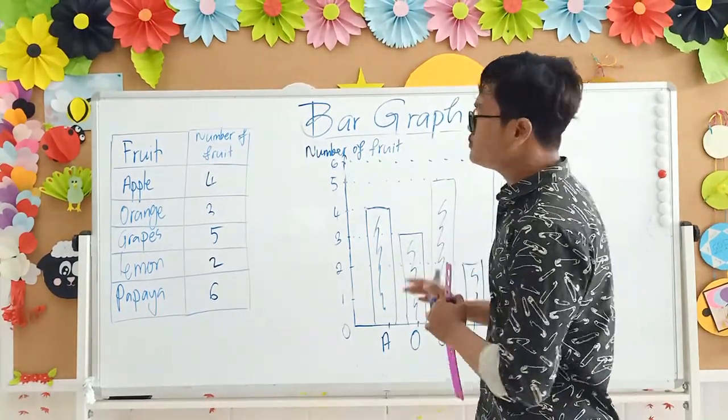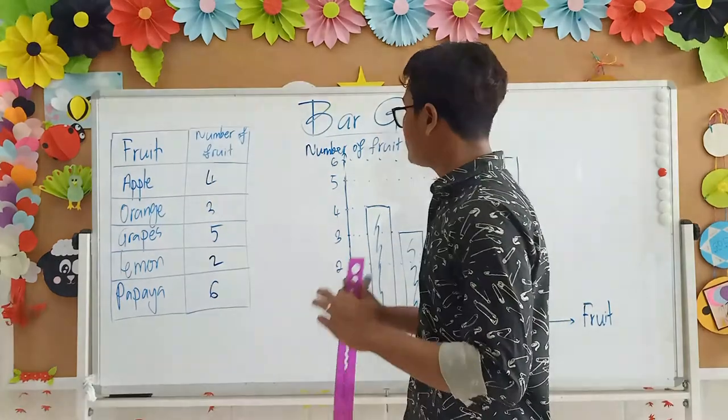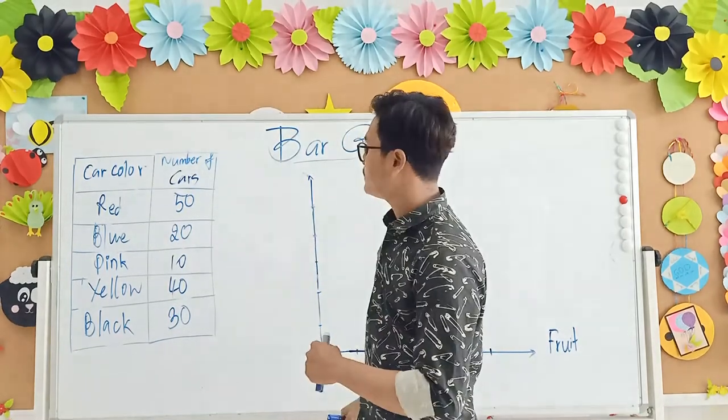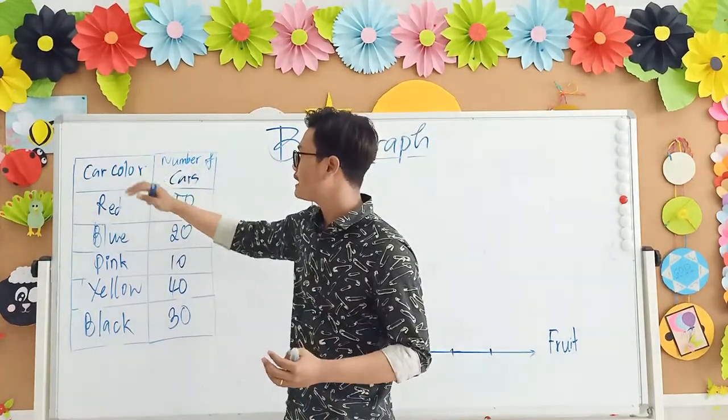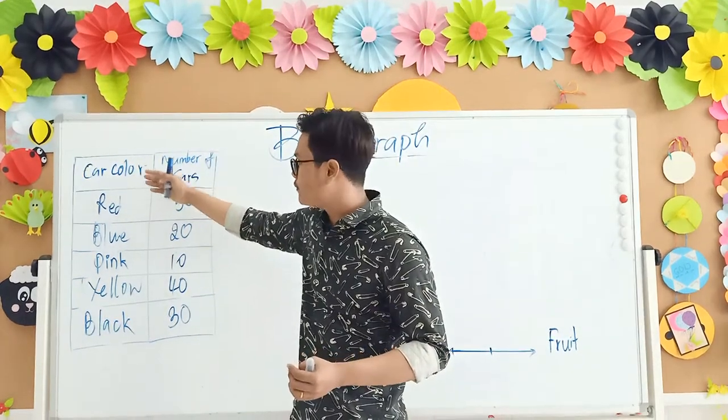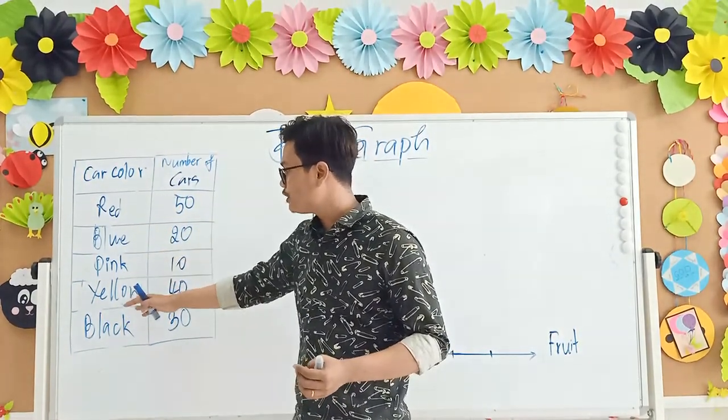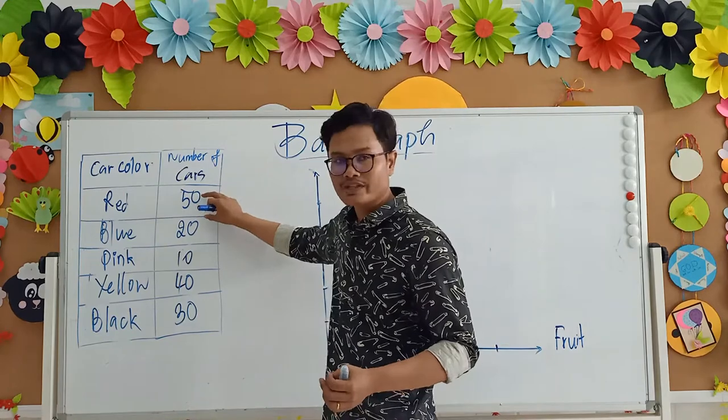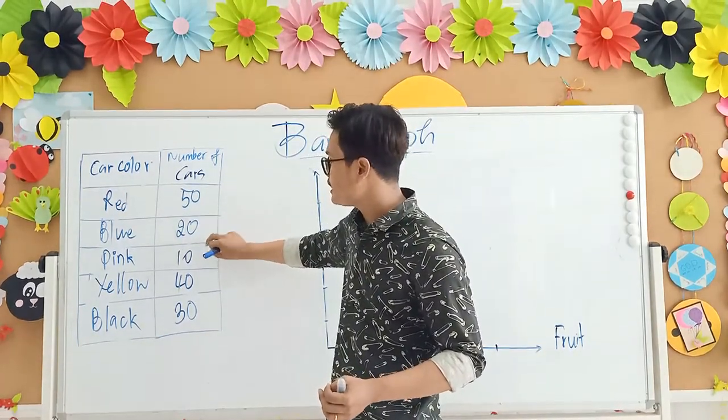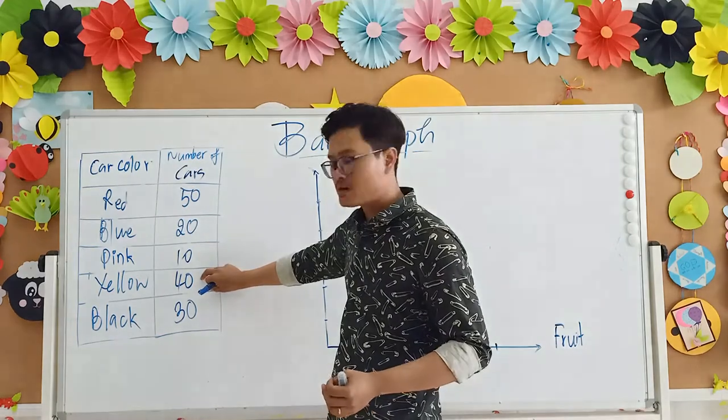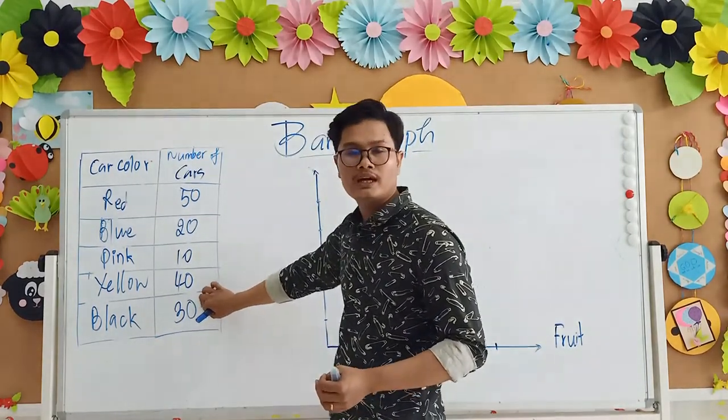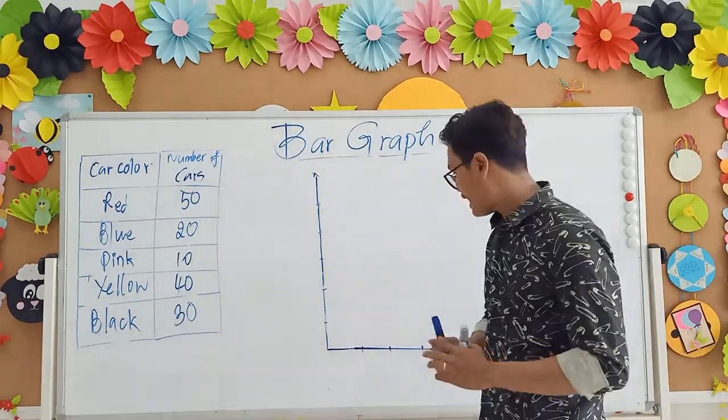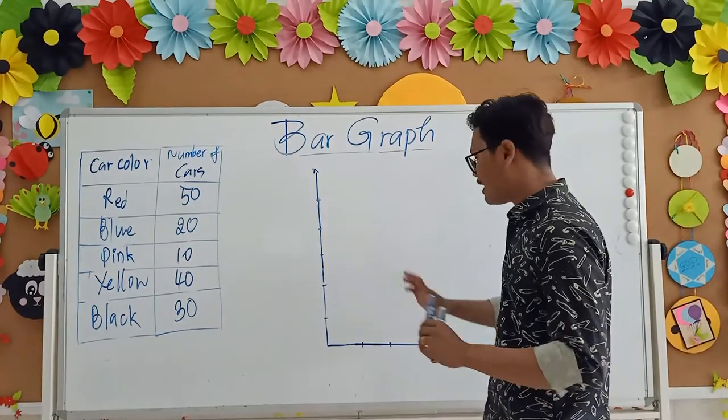Anyway, I give you one more example. Let's see one more example. Here is another example for one or two kinds. Now I change. I put fruit. Now I change to color. So we have red, blue, pink, yellow, and black. And red is the number of cars. Red we have fifty, blue has twenty, pink we have ten, and yellow has forty, and that's one black we got thirty. Now let's see our bar graph.